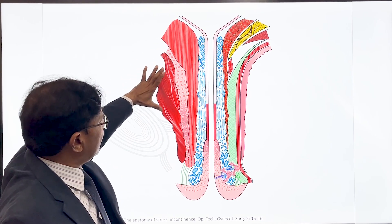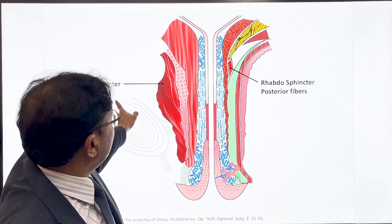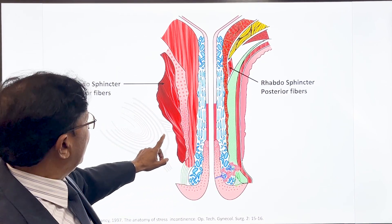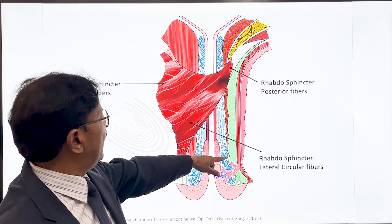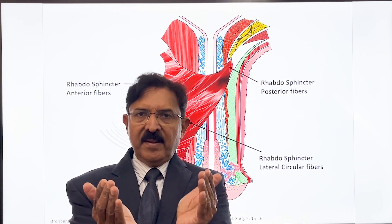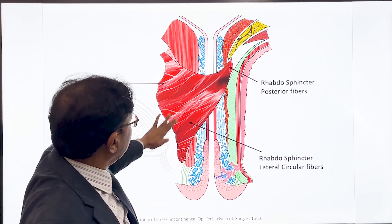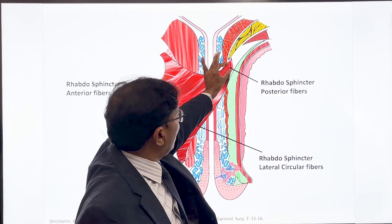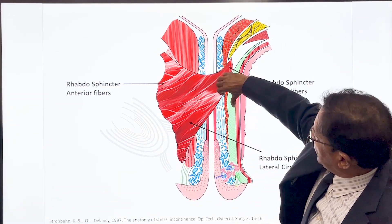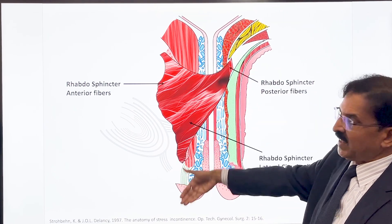As shown in this animation, the rhabdosphincter is thin at the top, thickest in the middle part, and again thin at the lower part. The rhabdosphincter is a U-shaped sphincter — anteriorly there is a lot of bulk, sideways some bulk, and posteriorly it becomes tendinous into a small tendon. It is like a fan — very big anteriorly and converging into a small point. The direction of the fibers means that when this fiber constricts, it will not only occlude the urethra but will also pull the urethra backwards.